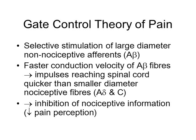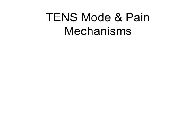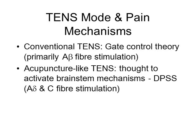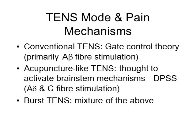Each mode of TENS is thought to activate different pain relief mechanisms. Conventional TENS is thought to activate mainly the pain gate theory by primarily stimulating A-beta fibres. Acupuncture-like TENS, on the other hand, is thought to activate the release of endogenous opioids and activate descending pain suppression mechanisms. Burst TENS is thought to possess the benefits of both conventional and acupuncture-like TENS. It is highly unlikely, however, that the mechanisms of action are so simple, and there may be strong psychological effects influencing cortical processing of pain information, regardless of the mode of delivery.